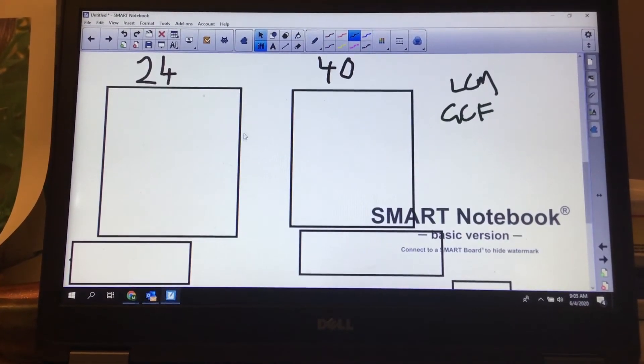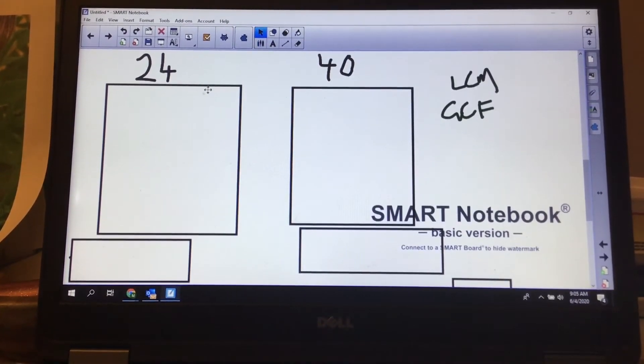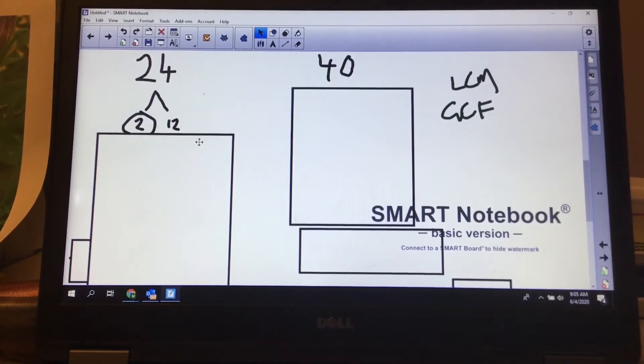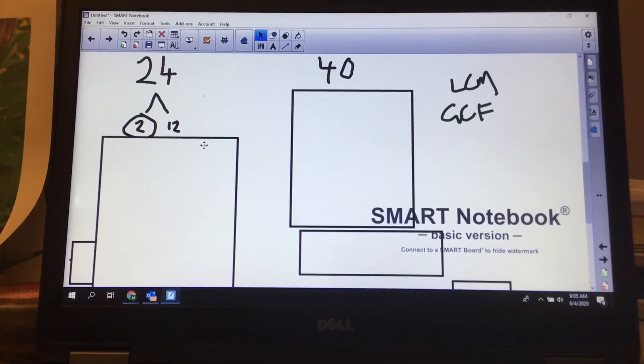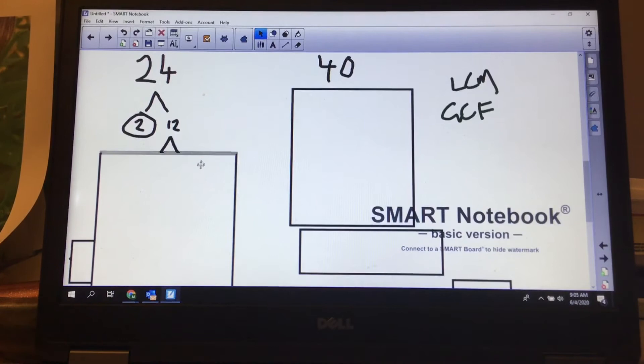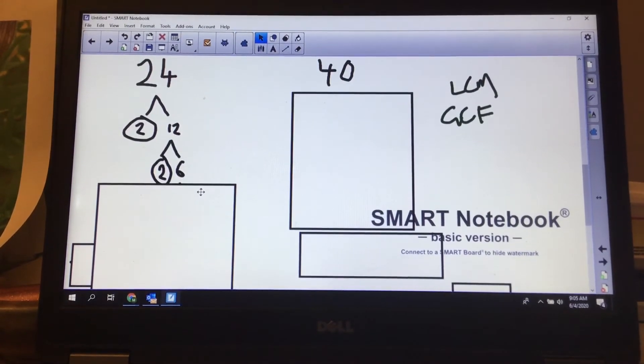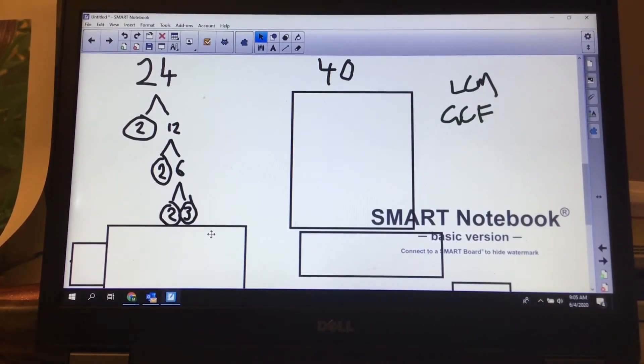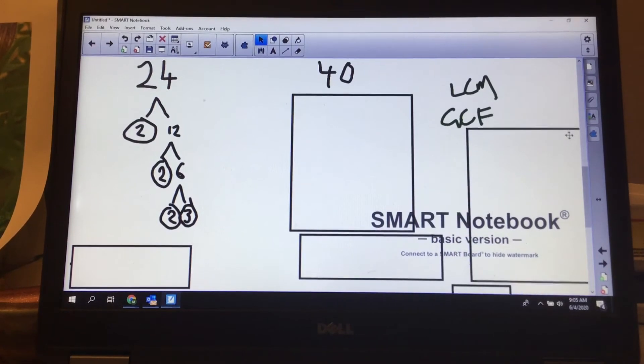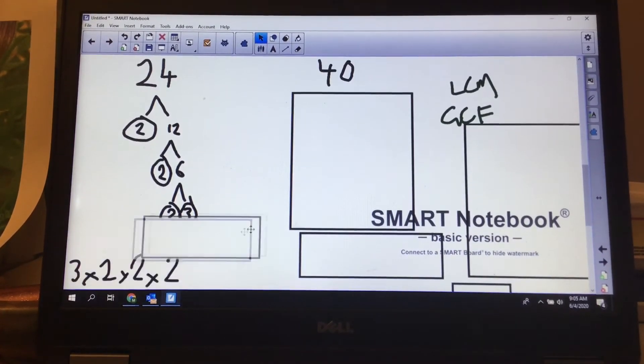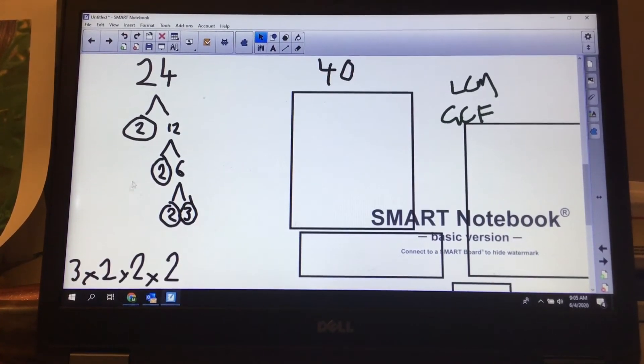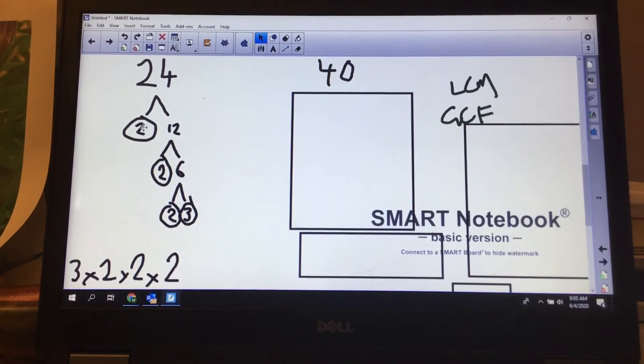Let's take this up. If I factor 24, it's even, I divide by 2, I've got 12. It's even again, I divide by 2, I've got 6. It's even again, I divide by 2 and I've got 3. So my prime factorization for 24 is 3 times 2 times 2 times 2.